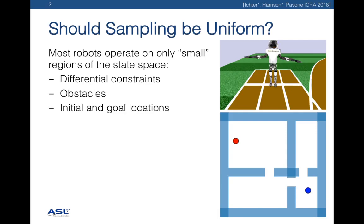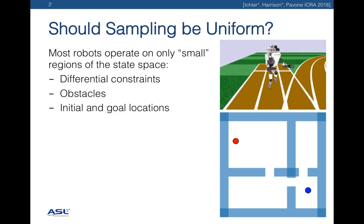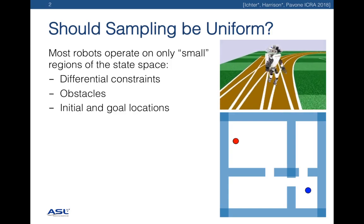In practice, however, many systems operate only over small regions of the state space, so should our sampling scheme really be uniform? For example, the Atlas system operates almost entirely in a standing and walking position.